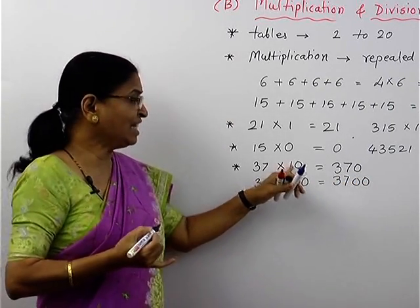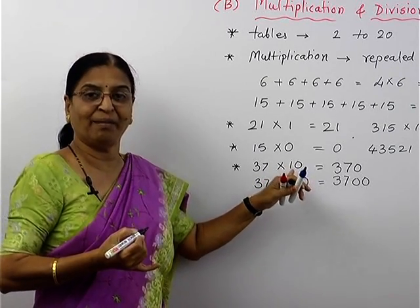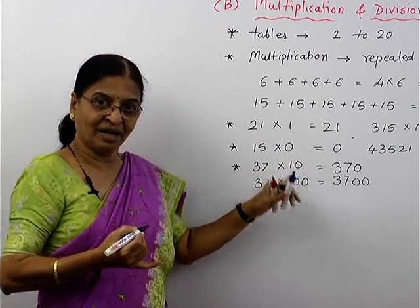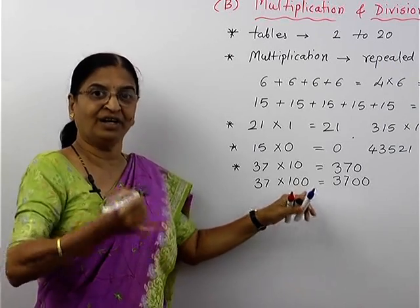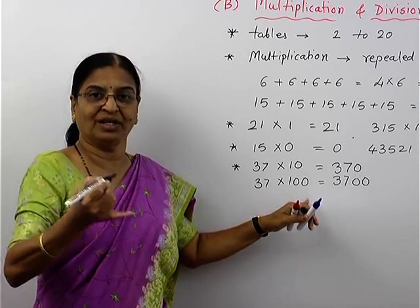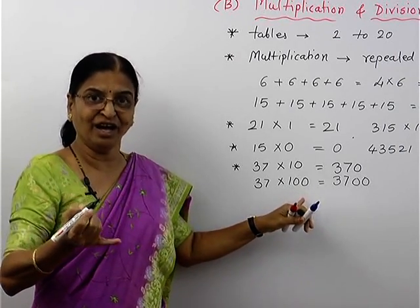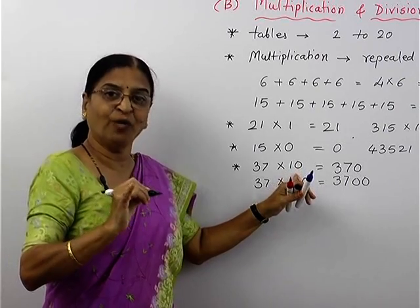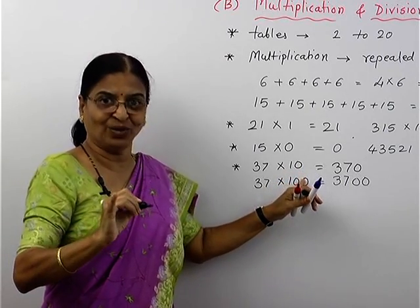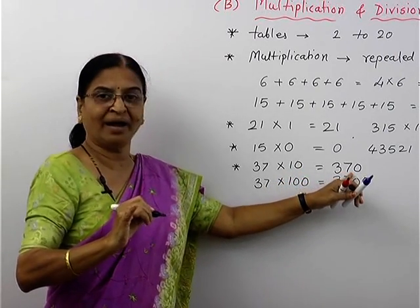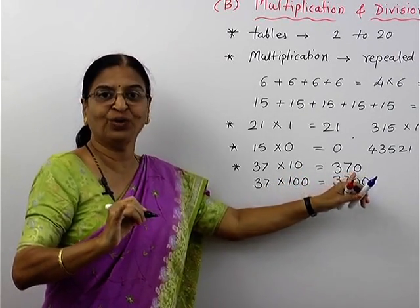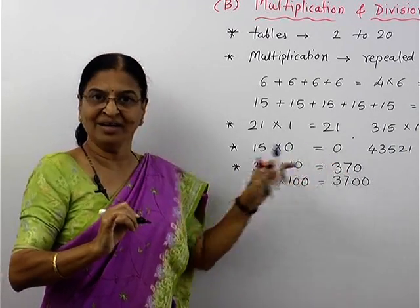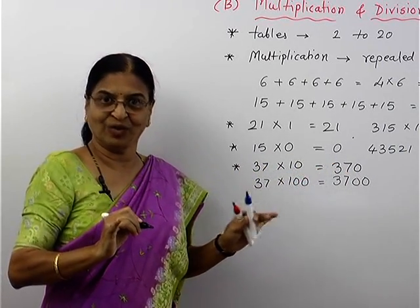Any number when multiplied by 10, 100, 1000, 10,000, etc. — that is, numbers which have 1 followed by zeros — simply add the corresponding number of zeros to that number and you will get the answer.